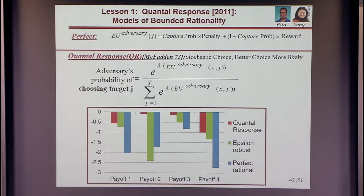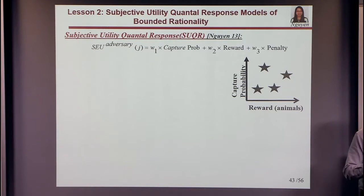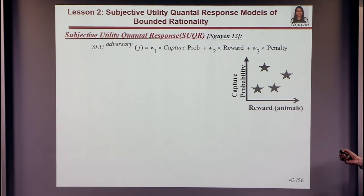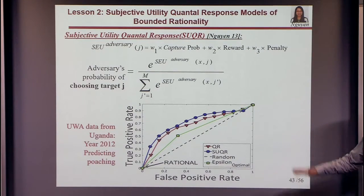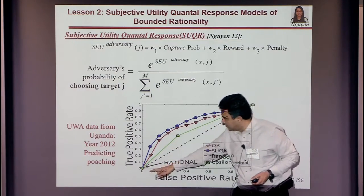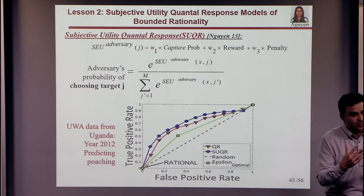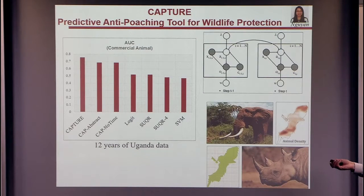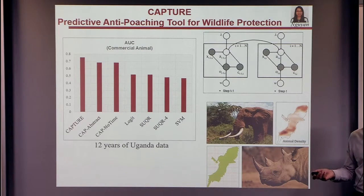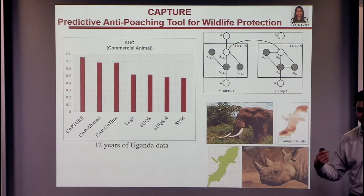Matching SUQR against real data from Uganda for year 2012 using an ROC curve, SUQR achieves better accuracy in predicting where poachers attack compared to competing models from the literature. We submitted a paper to AAMAS last night — a system built for Uganda's Wildlife Conservation Society showing continued improvement in modeling adversary behavior using real-world data. We also found that in our data, human probability perception is the opposite of what Kahneman and Tversky find in prospect theory: rather than overweighting low probabilities, people seem to not care about low probability events and care most about slightly high probabilities.